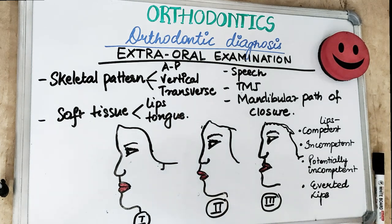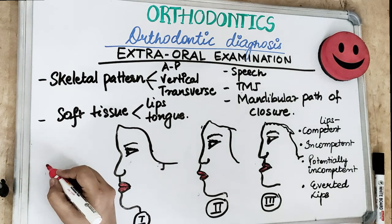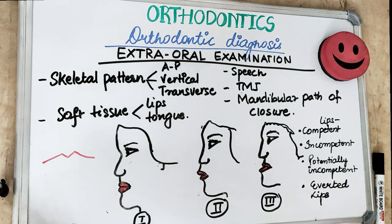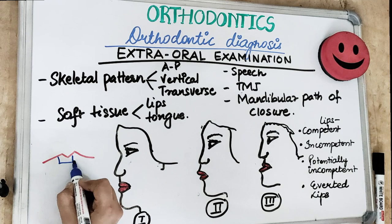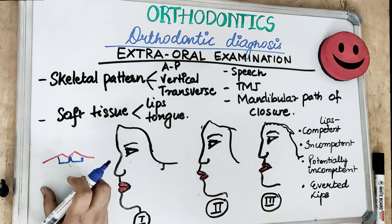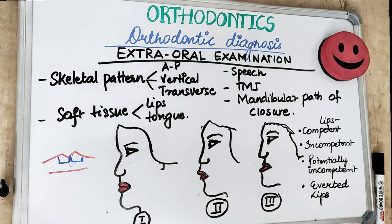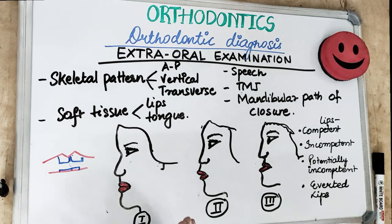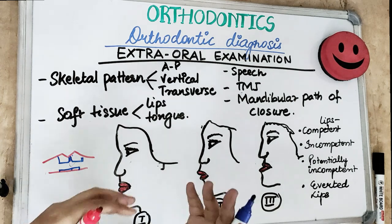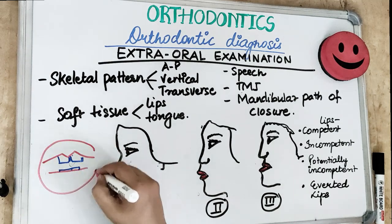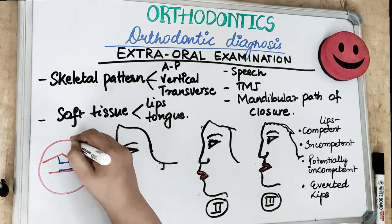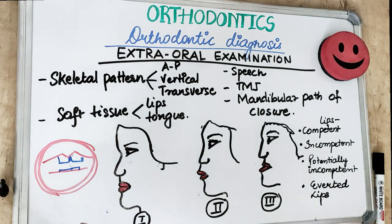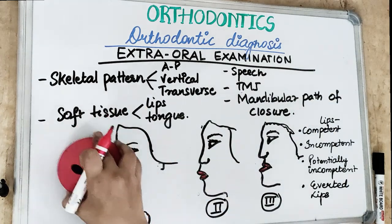For soft tissue examination, the upper lip normally covers the entire labial surface of the upper anteriors except two to three millimeters. When the patient is at rest, two to three millimeters of the upper incisor are visible beneath the upper lip. For the lower lip, two to three millimeters of the incisal edge of the upper anteriors and a little of the lower anteriors are visible. Lip seal is achieved by contraction of the mentalis muscle and orbicularis oris muscle.